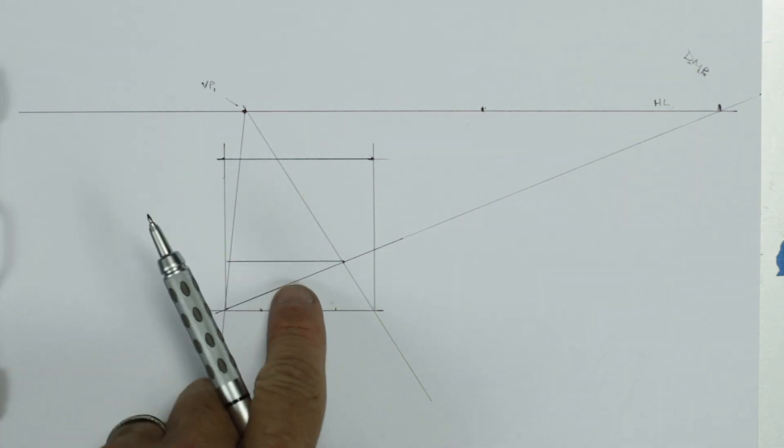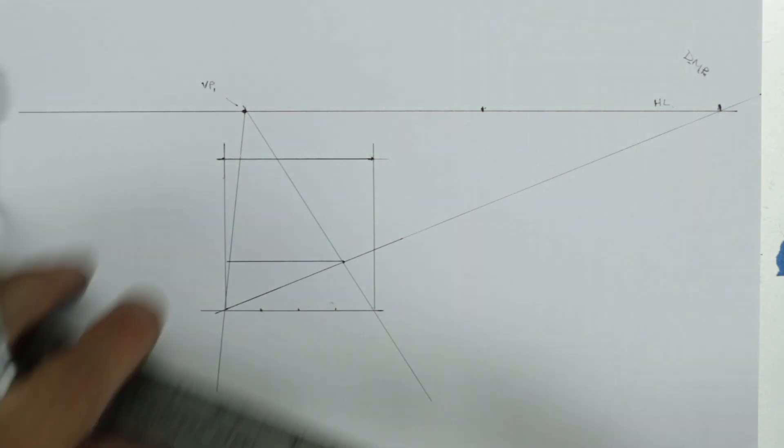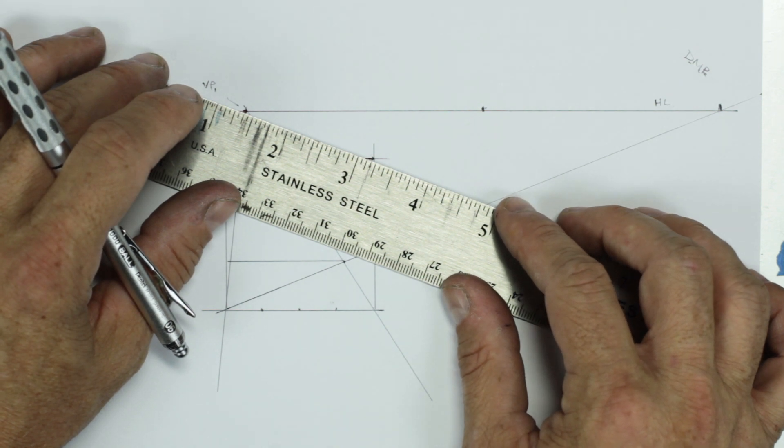And we have a perfect square going back into space, which basically means we have the beginnings of a perfect cube.